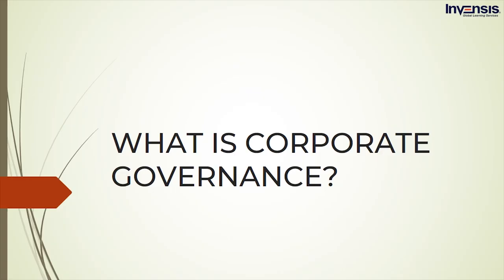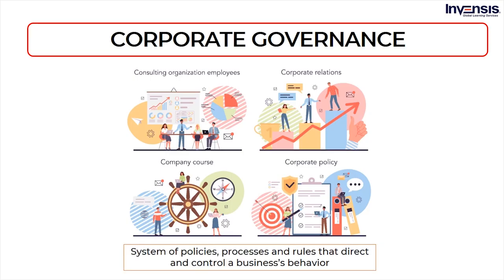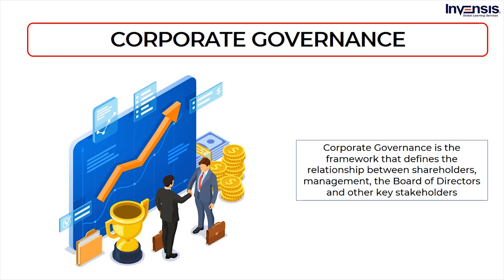Any company or organization follows the organization structure. Now we are going into the major factors based on which any organization is governed and monitored. Corporate governance is the system of policies, processes, and rules that direct and control a business's behavior. Corporate governance includes the areas of environmental awareness, ethical behavior, corporate strategy, compensation, and risk management. Discussing and consulting the employees in achieving the goals and objectives, maintaining corporate relations in the interest of business, monitoring the course of direction of the company, and maintaining and adhering to the corporate policies is something corporate governance takes care of. Corporate governance is the framework that determines the relationship between shareholders, management, the board of directors, and other key stakeholders. This relationship is crucial in the management of any organization. This also determines how the organization is going to perform in the future and reach its objectives.